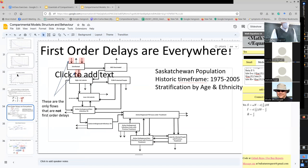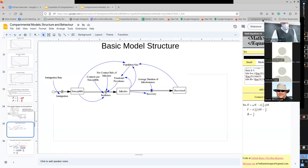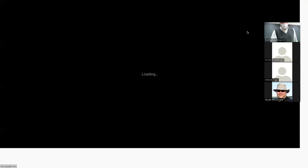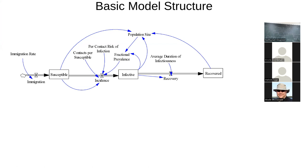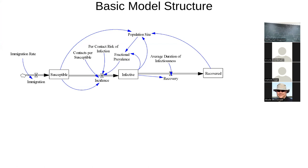First-order delays are everywhere, and I want to build up a model using them as building blocks. You're going to be seeing a lot of these models, and I'm going to expect you to quite fluidly translate from a stock-flow model into its differential equation. We're mapping a syntax here, which is pretty straightforward, into a semantic domain.